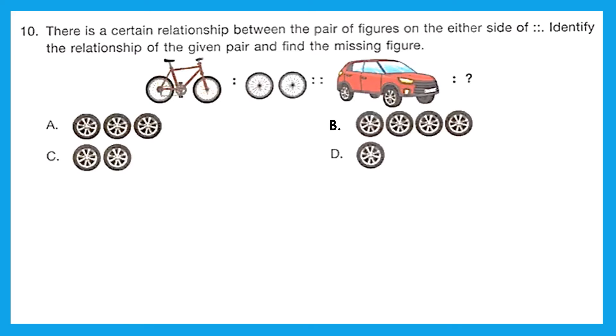Question 10: There is a certain relationship between the pair of figures on either side. Identify the relationship of the given pair and find the missing figure. So there is bicycle and two tires, then there is car, then how many tires should be there? It should be four, right? Car has four wheels. Option B is the right answer.